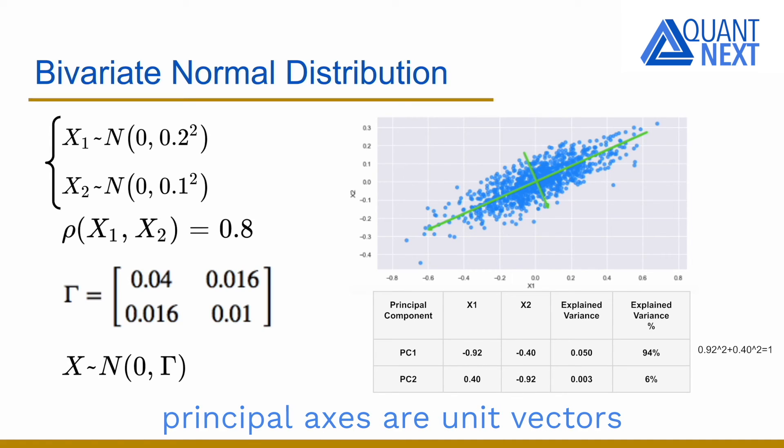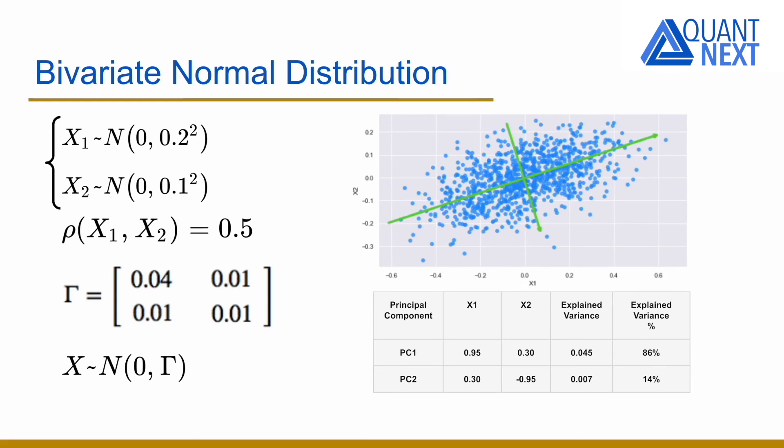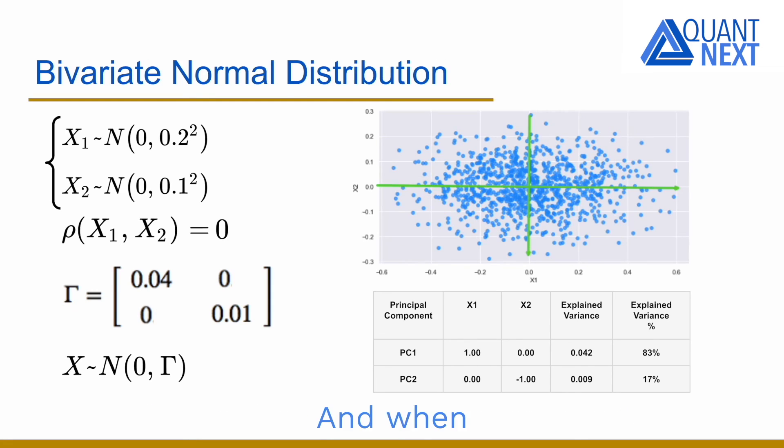And we can see that principal axes are unit vectors with a magnitude of 1. If we reduce the correlation between the two variables, we see that the angle between the first principal component and the first axis decreases. The relative weight of the variable with the highest variance increases in the first principal component.